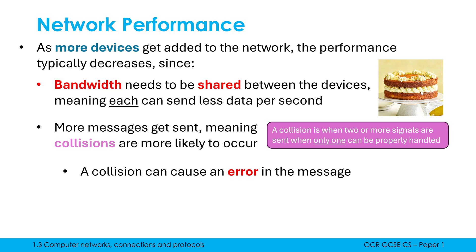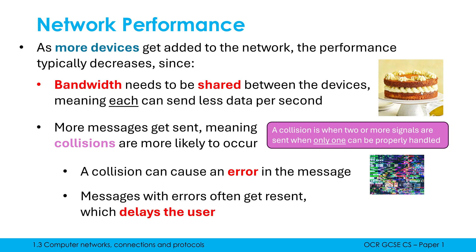Collisions can occur even if you've only got two users on a network, but the more users you add, the more likely it is that collisions occur. For some messages, an error might result in a glitch on the screen — a live stream, for example, often has frames drop out or glitches because of collisions happening. For some situations though, we can't just accept a glitch and have to resend the message. For example, if I'm sending an email, it's not acceptable that part of my email is missing. So if we have a collision, you'll have to resend the missing chunk, which delays the process and slows things down. That's why you feel the impact on performance, and that could be the cause of things like buffering.